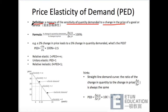那来看一下它的formula. So how can we calculate PED? It's a percentage change in quantity demanded divided by percentage change in price. 这其实就是definition转成了一个公式。So it's ΔQ divided by Q (分子)，分母是ΔP divided by P，然后乘以100%。